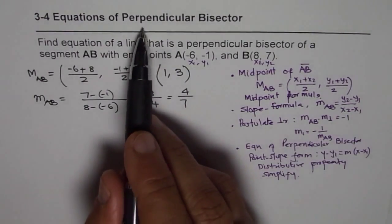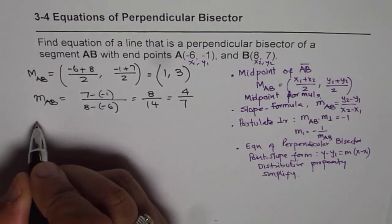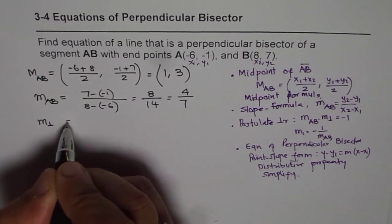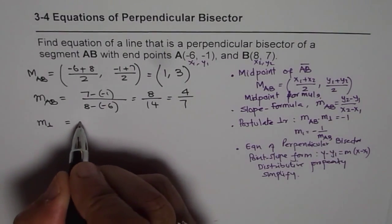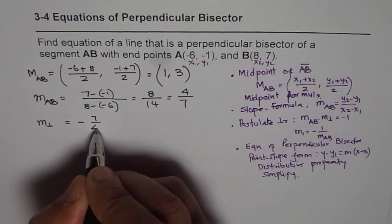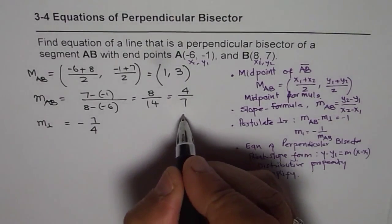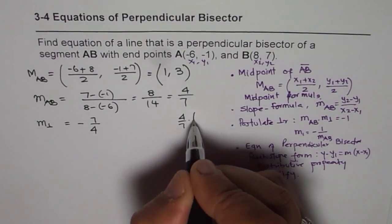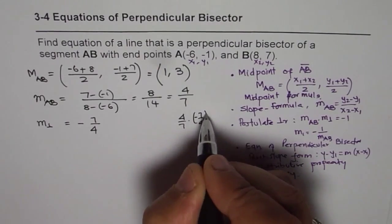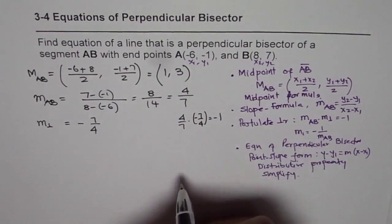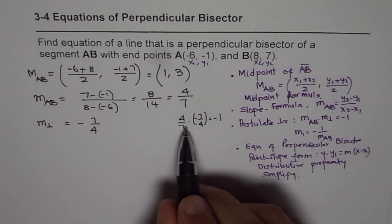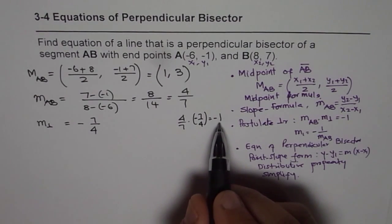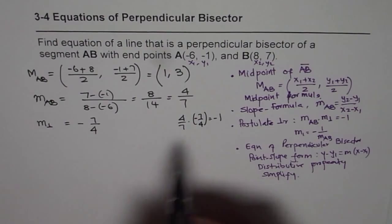Now we need perpendicular bisector. So the slope of perpendicular line should be negative reciprocal, as we have shown here, which means negative of this value, and 7 over 4. So you can verify that (4/7) times (-7/4) is indeed equals to -1. That is the postulate for perpendicular lines. If product of their slopes is -1, then they are perpendicular.